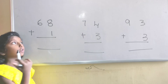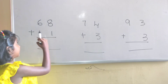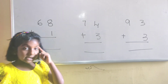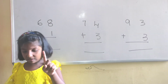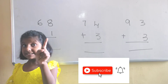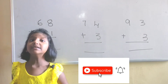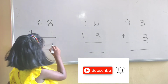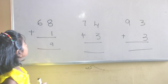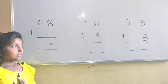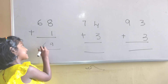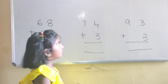Let's see the question: 6, 8, 1. 8 in mind, 1 in hand. 8, after 9. The answer is 9. Here there is no number to add, writing 6. The next number is 7, 4, 3.